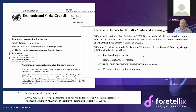GRVA is developing a set of new assessment and test methods. Thirty years ago, certifying a vehicle meant testing brakes and smoke emissions. Today, with sophisticated systems, you need to test much more and decide how to certify a new automated driving system — including addressing cybersecurity and other areas. Fortelix specifically is focused on the set of new assessment and test methods and is proposing some of them to GRVA.